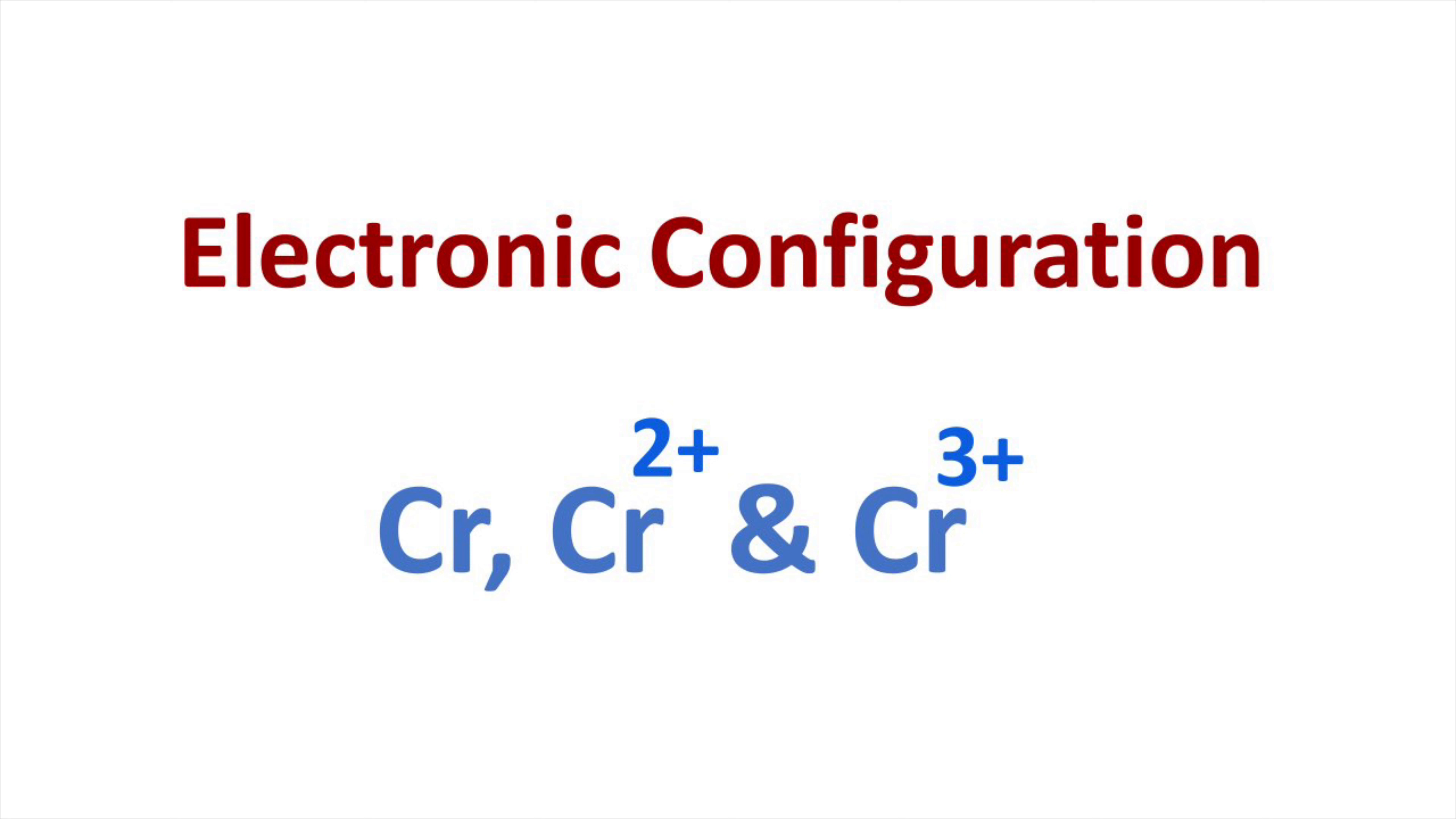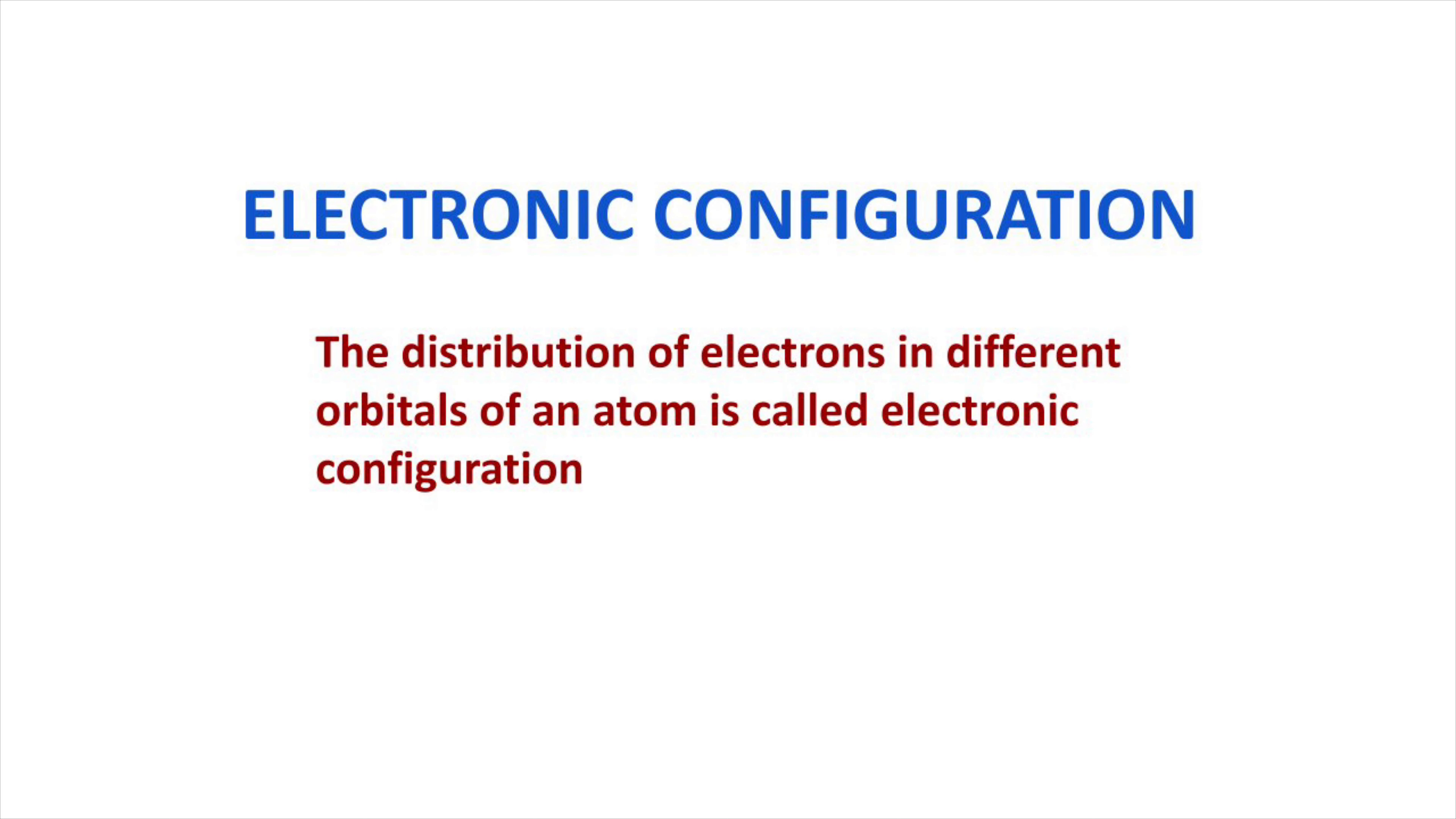Welcome to Aurora Chemistry for Everyone. Here we will discuss how to write the electronic configuration of chromium and its ions Cr²⁺ and Cr³⁺. The arrangement of electrons in different orbitals of an atom is called electronic configuration.